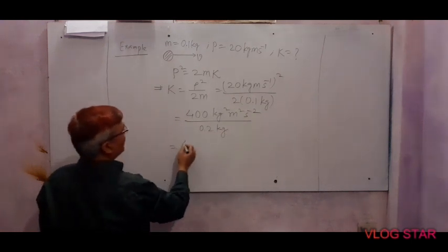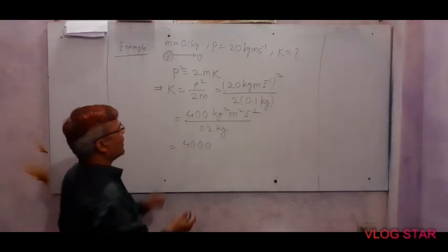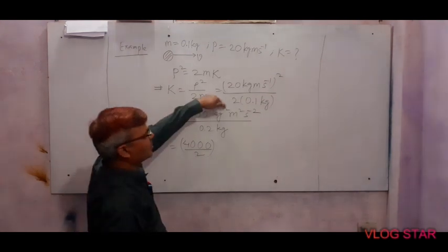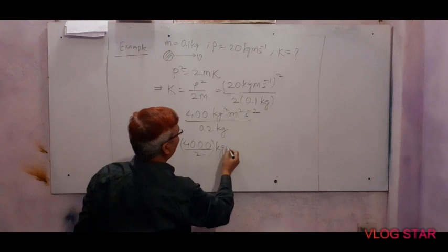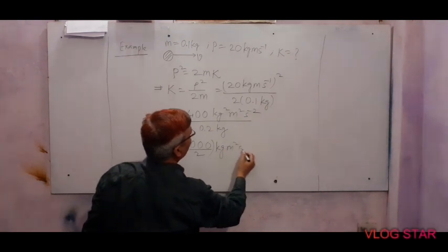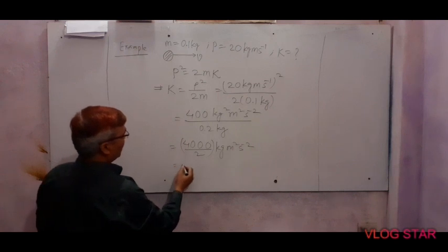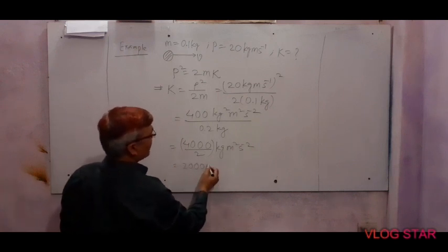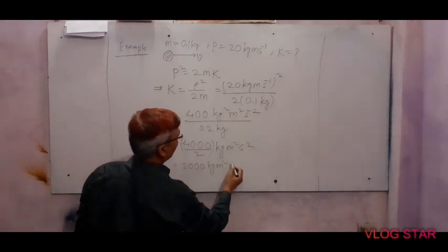This can be written as 4000 divided by 2. kg squared here, 1 kg cancels. We will get 2000 kg meter squared per second squared.